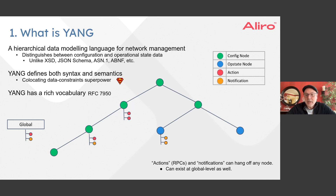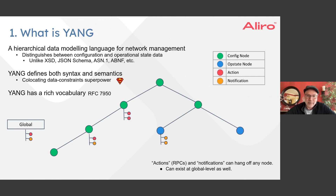This ability to annotate nodes as configuration or operational state is somewhat unique compared to other data modeling languages like XSD, JSON Schema, ASN.1, or ABNF — none of those have this notion of identifying what data represents configuration versus operational state. Additionally, in the diagram there are red and orange nodes: red nodes represent actions, such as remote procedure calls to reboot a device or restore factory defaults, while orange nodes represent notifications — one-way asynchronous messages sent to listening clients about events occurring in the system.